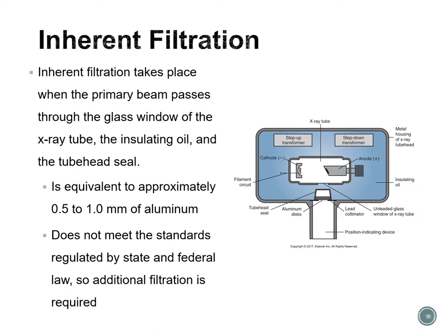Inherent filtration takes place when the primary beam passes through the glass window of the x-ray tube, goes through the insulating oil, and through the tube head seal. The inherent filtration of the dental x-ray machine is equivalent to approximately 0.5 to 1 mm of aluminum. Inherent filtration alone does not meet the standards regulated by state and federal law, and therefore added filtration is required. The glass window, oil, and tube head seal together constitute inherent filtration.